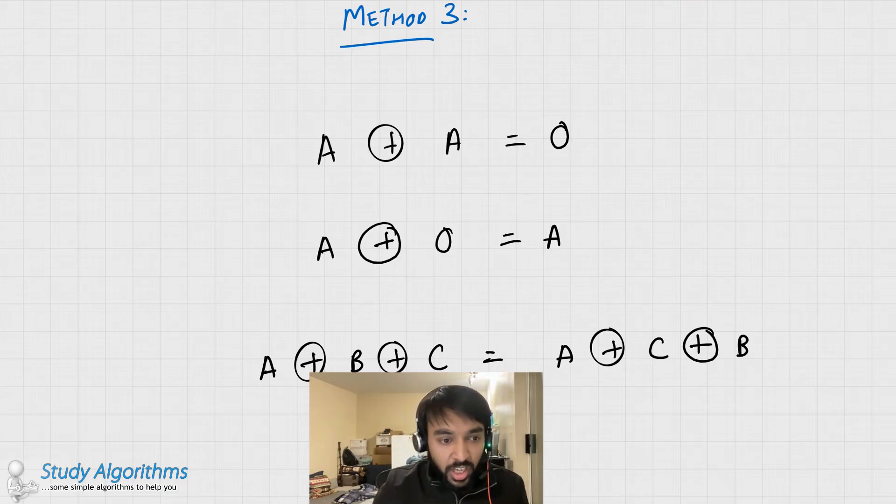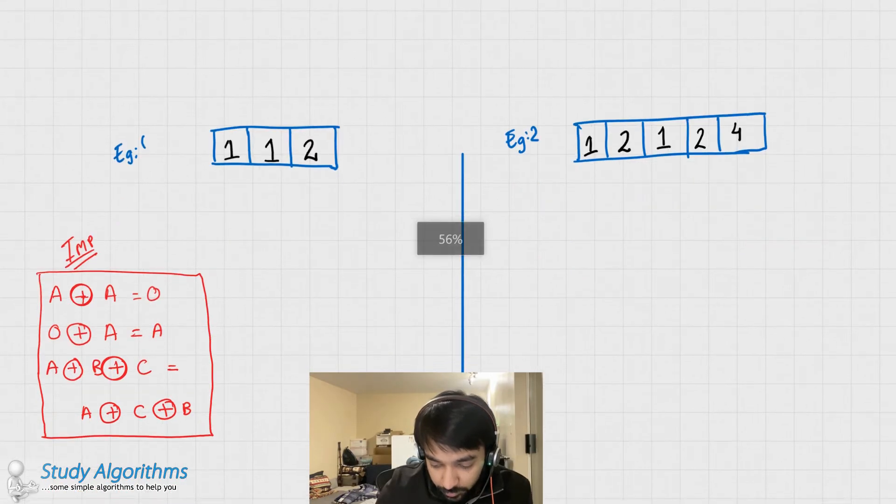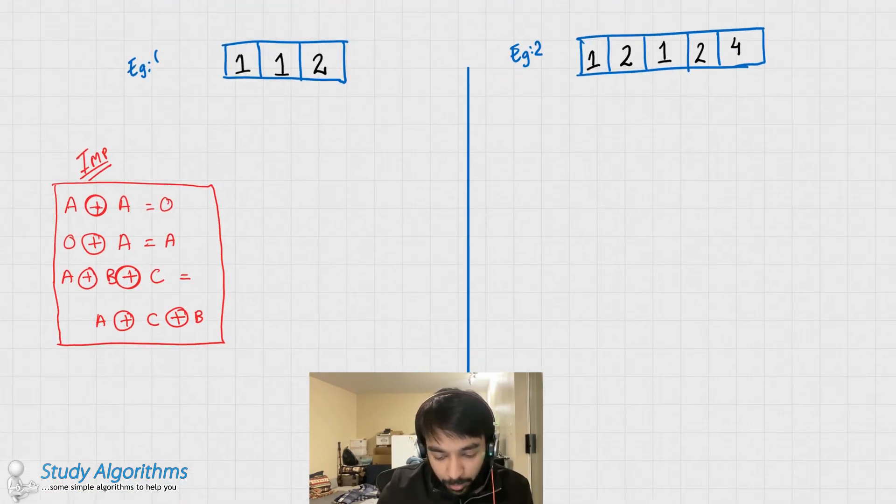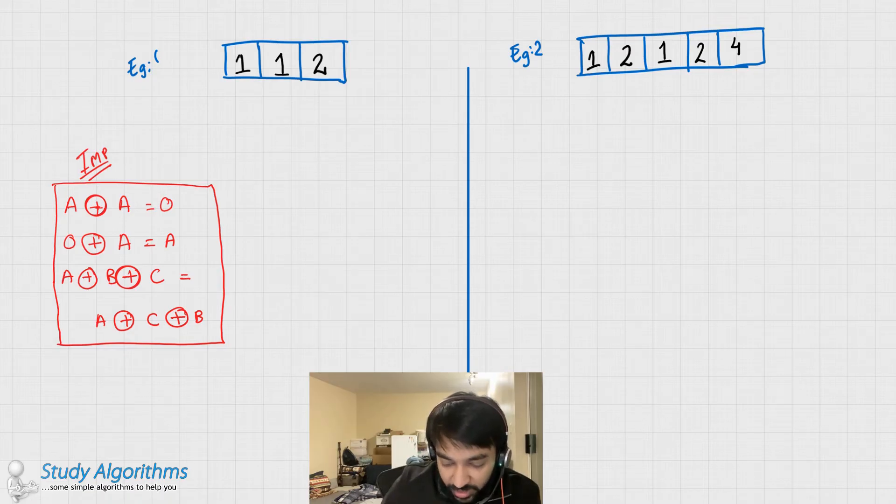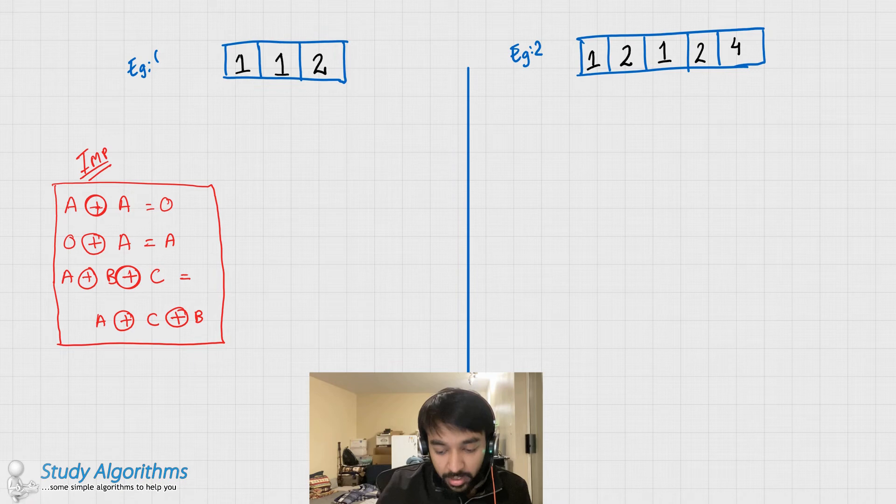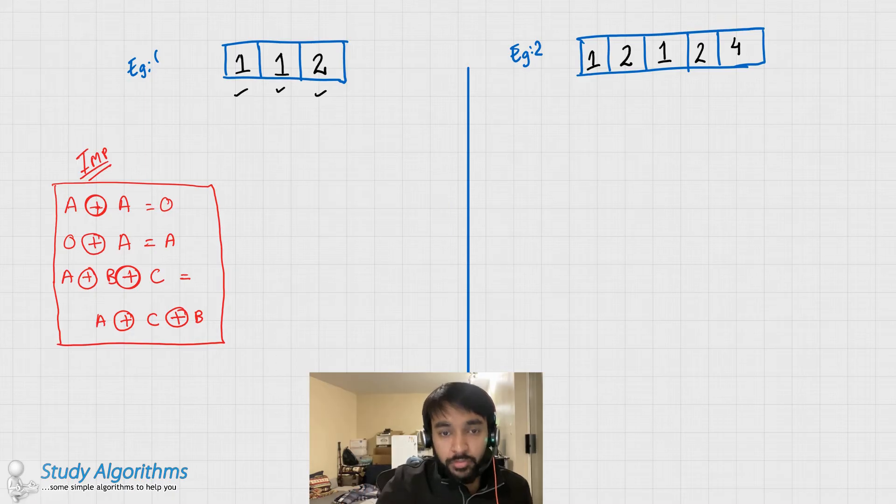Now let us try to use these properties to solve our problem. Let us take two examples. In the example on the left, you can see that I have an array that has the elements 1, 1, and 2. Now what if you just XOR all the elements with one another?